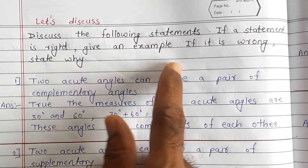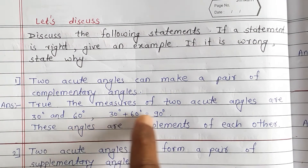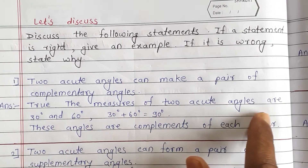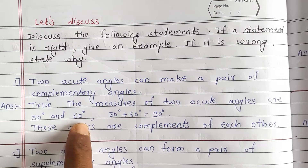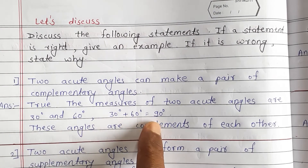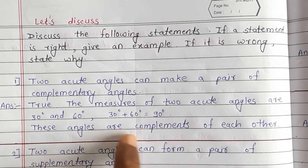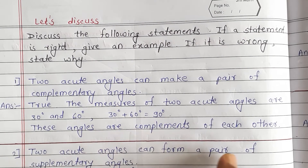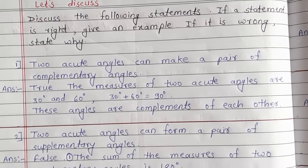The statement is right. Give an example: the measure of two acute angles are 30 degrees and 60 degrees, and 30 plus 60 is 90, meaning these angles are complements of each other.